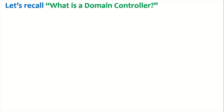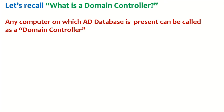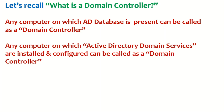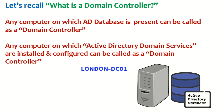Let's recall what exactly is a domain controller. Any computer on which the Active Directory database is present can be called a domain controller. In other words, any computer on which Active Directory Domain Services are installed and configured can be called a domain controller. In this example, we have a server named London-DC01 which hosts the Active Directory database, so we call it a domain controller.